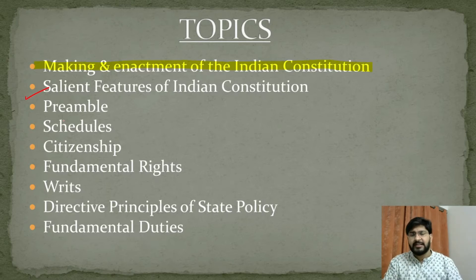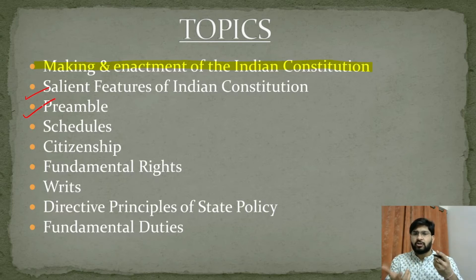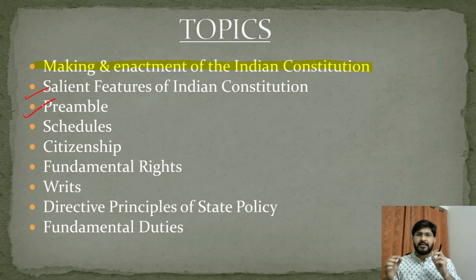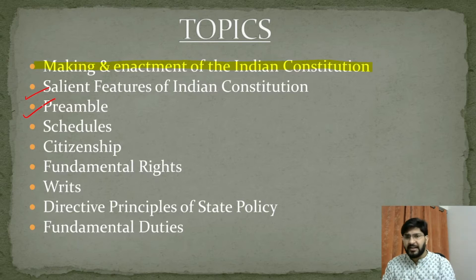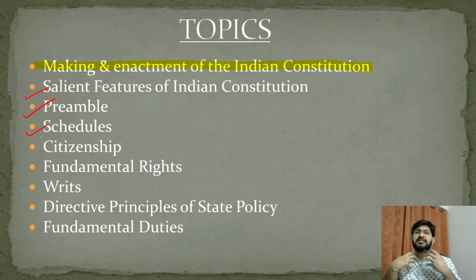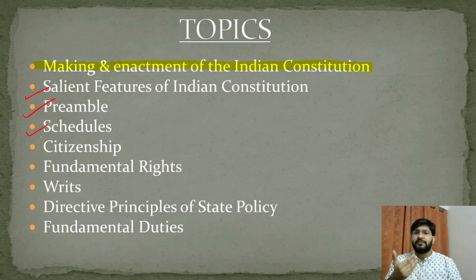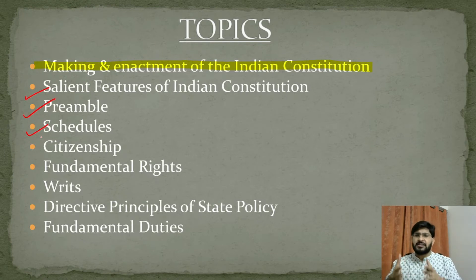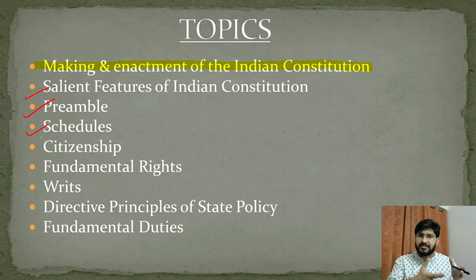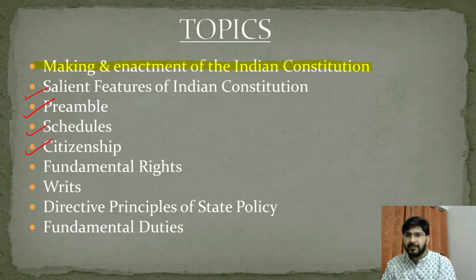The third topic is the Preamble. The Preamble is an introductory statement. If you want a rough idea of what the Constitution contains — its philosophy and fundamentals — you can read the Preamble. The next topic is Schedules. All the supplementary material in the Constitution is enshrined in the Schedules. When the Constitution was implemented on 26th January 1950, we had eight schedules, but through amendments over time, we now have 12 schedules.